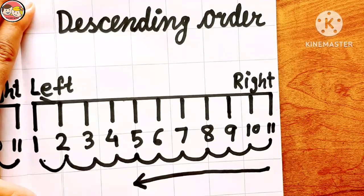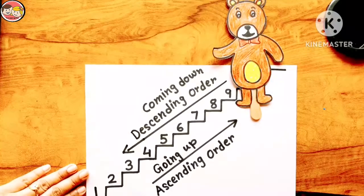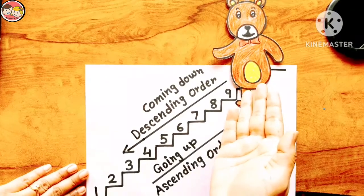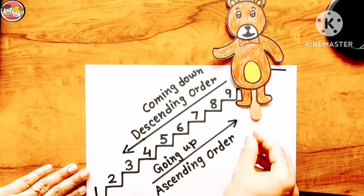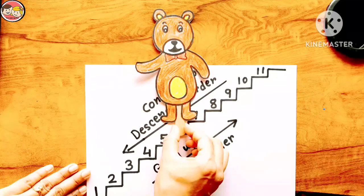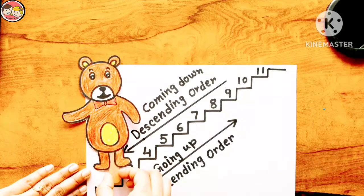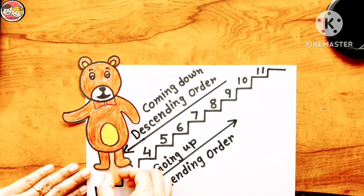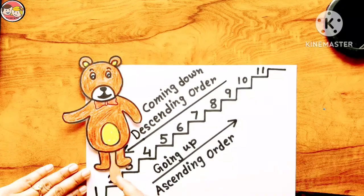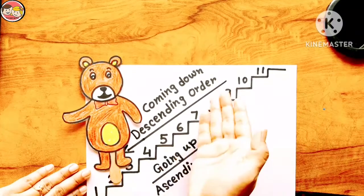Everyone repeat after me: descending order means arranging numbers from biggest to smallest. Now children, Billu has reached the top of the stairs and wants to come down. Let's start: 10, 9, 8, 7, 6, 5, 4, 3, 2. Billu is coming down the stairs. So we just need to remember that coming down is descending order — when numbers are arranged from largest to smallest, it is called descending order.